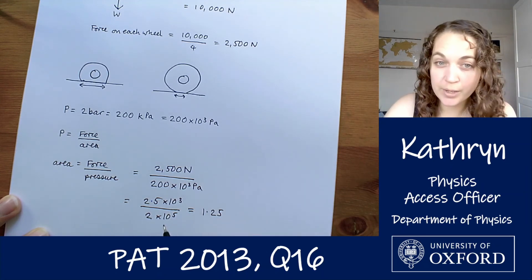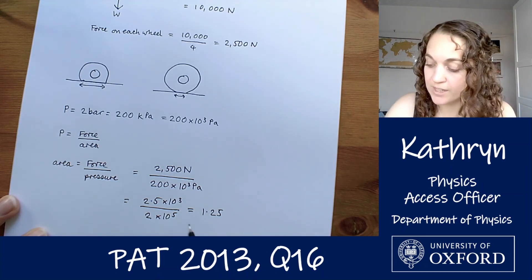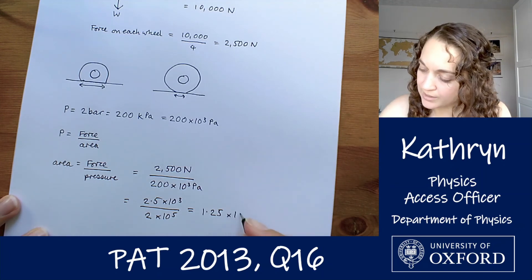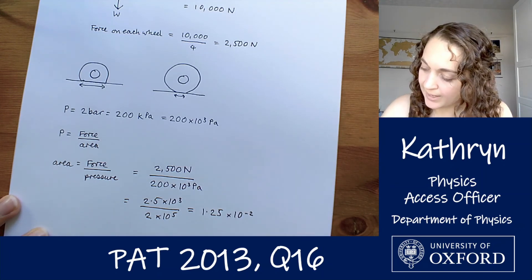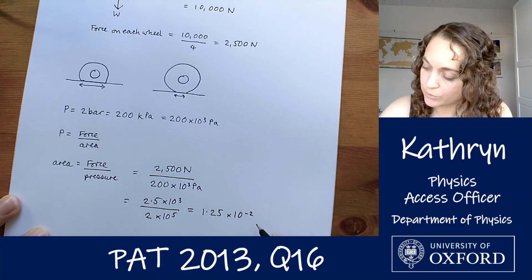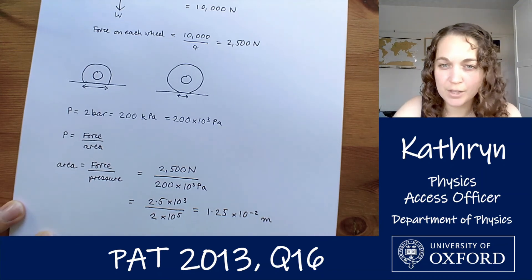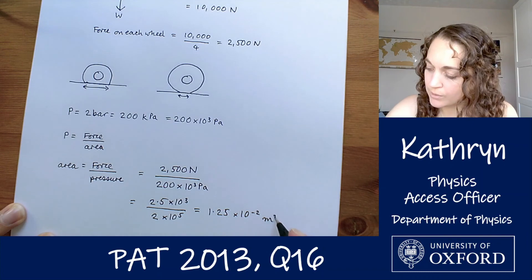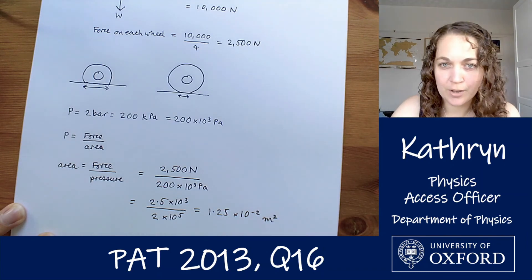And 10 to the 3 divided by 10 to the 5 is going to be 1 over 10 to the 2, which is 10 to the minus 2. And because we're all in our usual units, then that is 1.25 times 10 to the minus 2 square metres for our area.